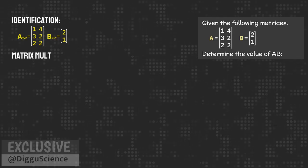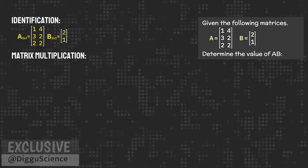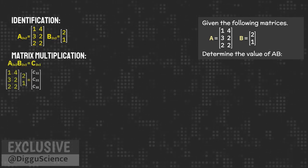Now, we can calculate the matrix multiplication. Based on the matrix multiplication formula, this multiplication will produce a matrix with an order of 3 by 1.